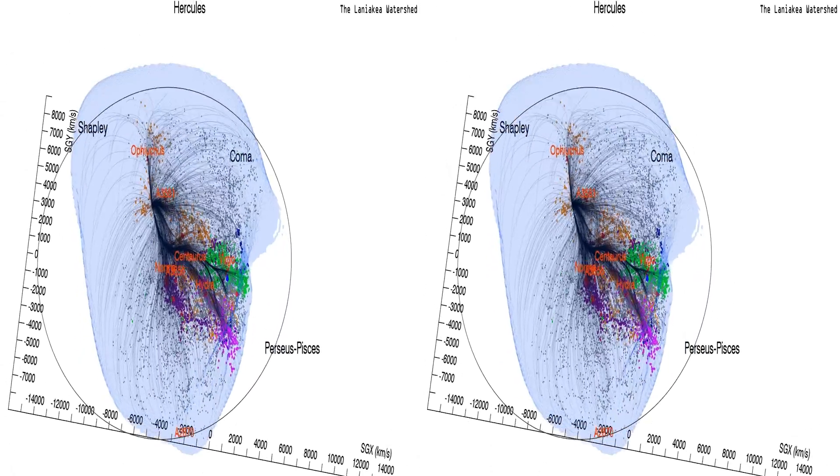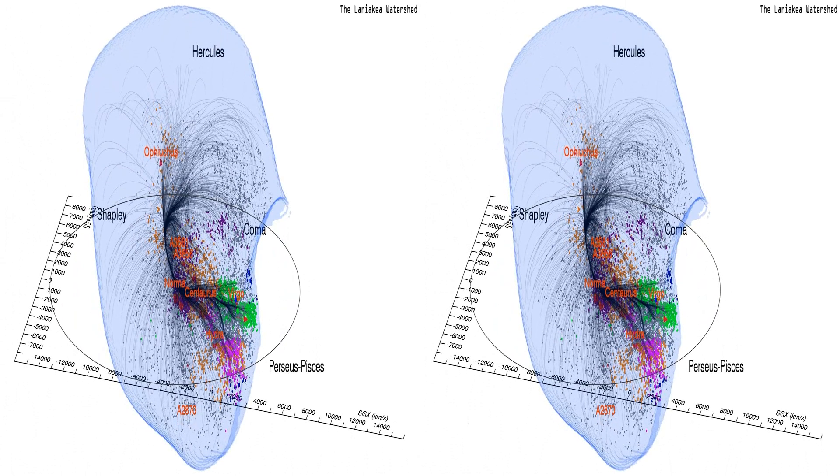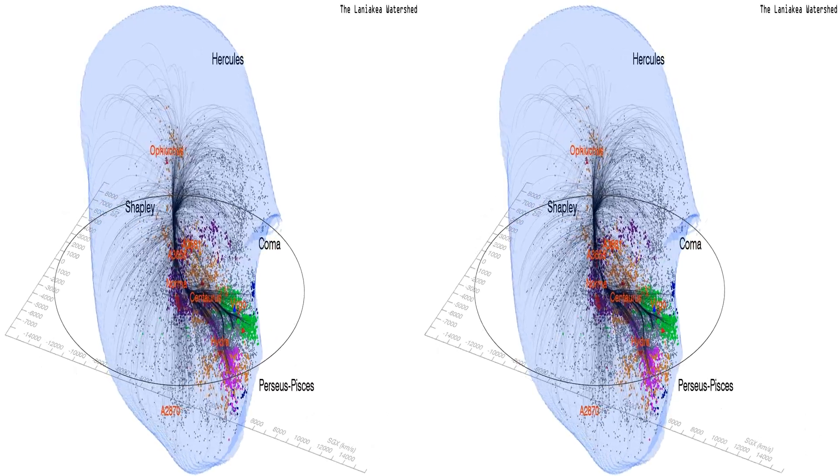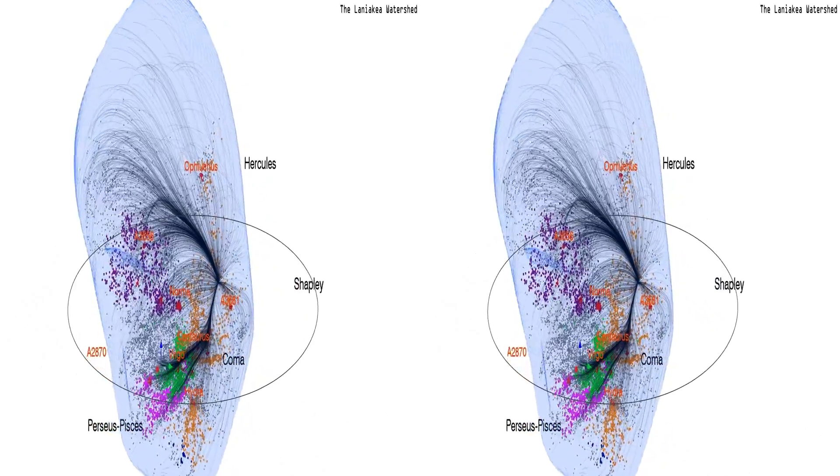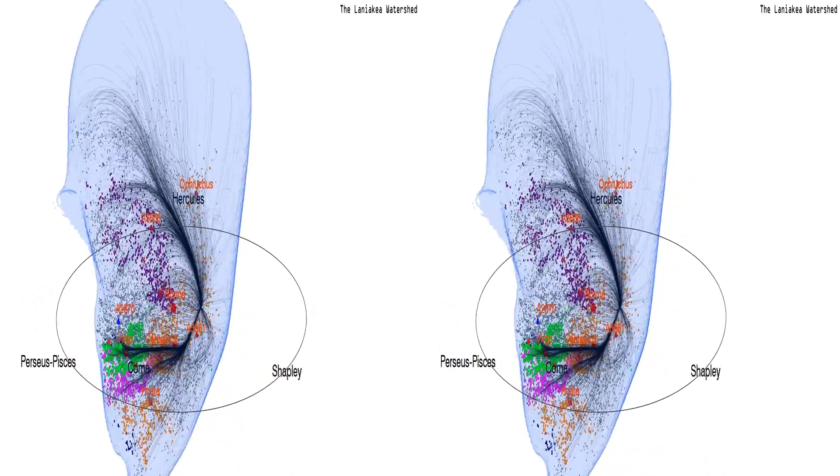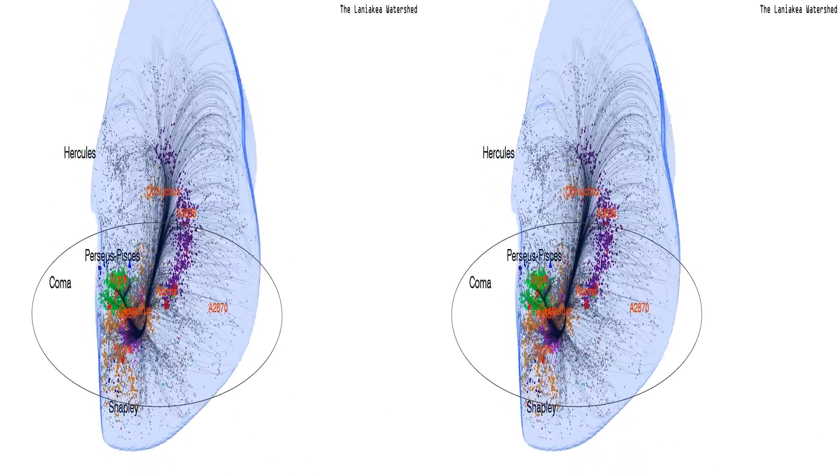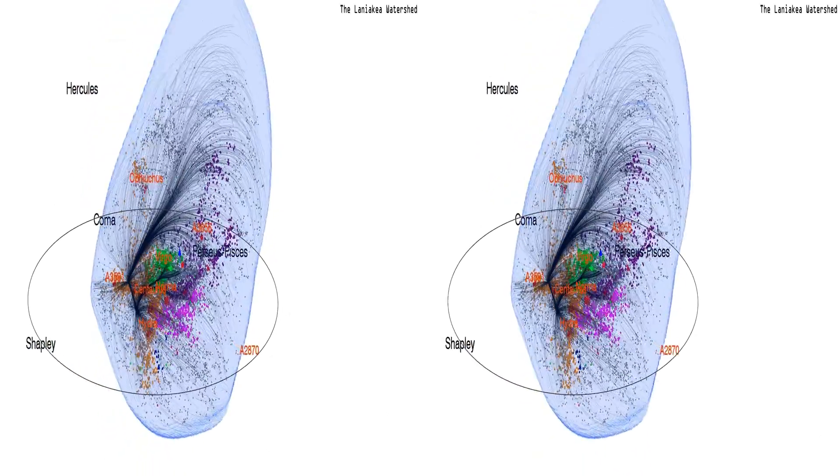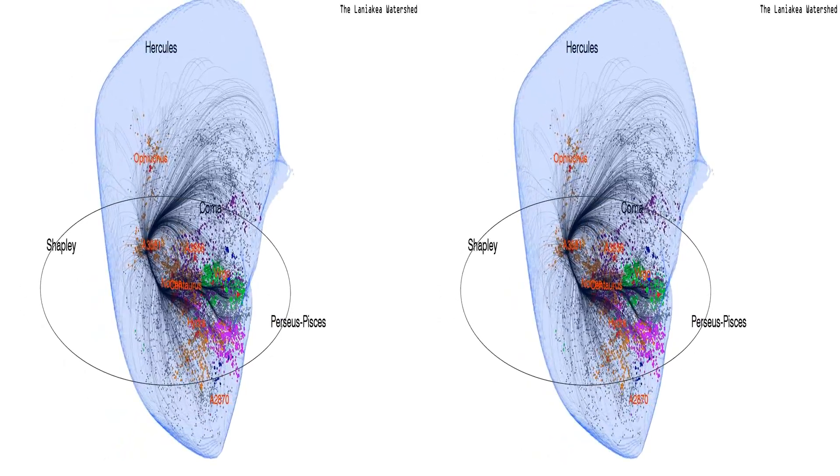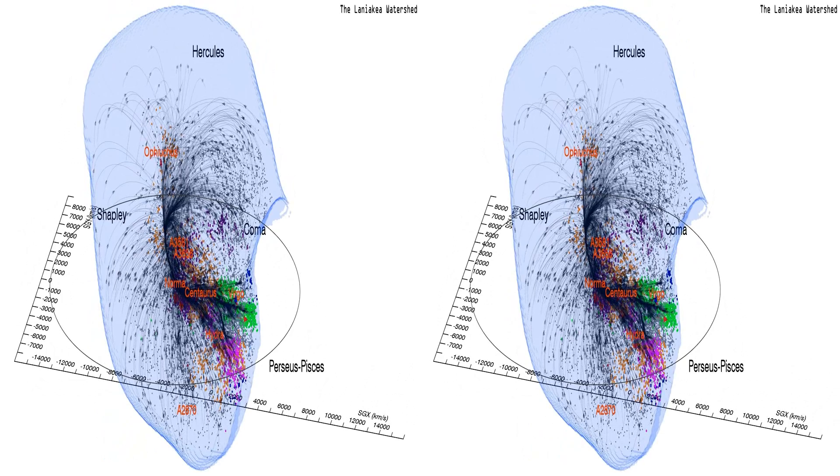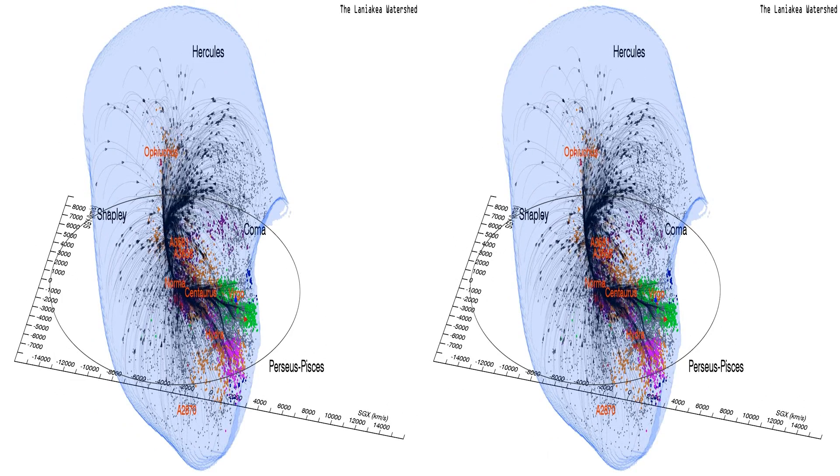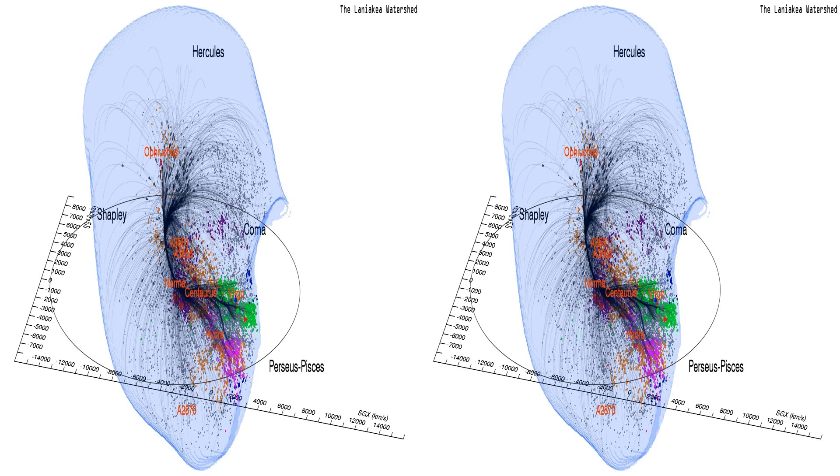A surface encloses the limits of the watershed. Black vectors illustrate the cosmic flow of galaxies towards a location near the normal cluster and the local potential minimum of this basin of attraction.